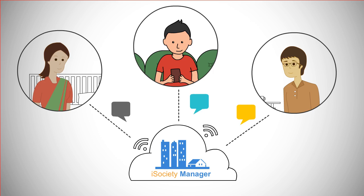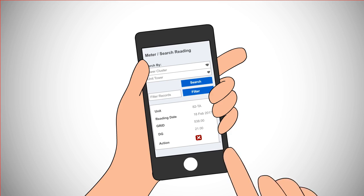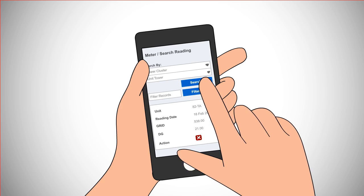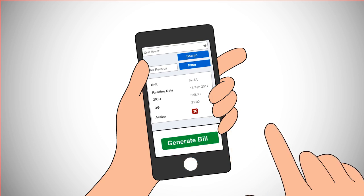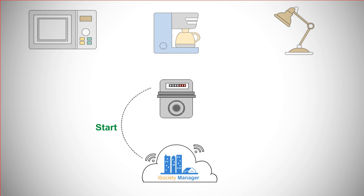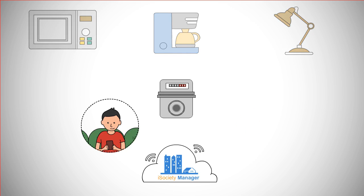An SMS will be sent to residents to give updates on their logged complaint to keep them informed about the status. Another feature is the bill management system, where residents will get current meter readings on their phone automatically. iSociety Manager is capable of generating bills with just one click. You can also start or stop your meter from your phone. It also facilitates threshold alerts and ease of handling of transfer cases.